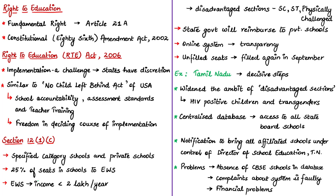Children from disadvantaged groups means children belonging to Scheduled Castes, Scheduled Tribes, and socially and educationally backward classes. The definition of disadvantaged group also includes social disadvantages, cultural disadvantages, economic, geographical, linguistic disadvantages, and disadvantages because of gender and other factors.